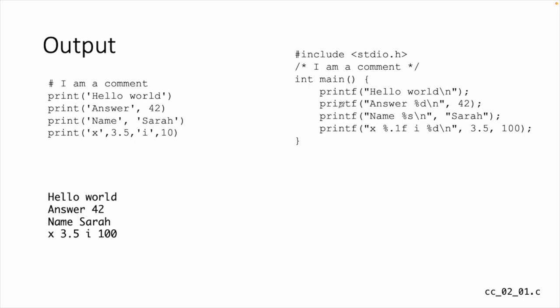Let's get started. On one side we'll see some Python, on the other side some C. This is talking about output — Python 3 of course. We have a print function that takes any number of parameters. 'Hello world' is part of a constant; 'answer comma 42' puts a little space in between answer and 42 in the output. The print statement automatically knows if it's got a string, float, or integer and handles it all automatically.